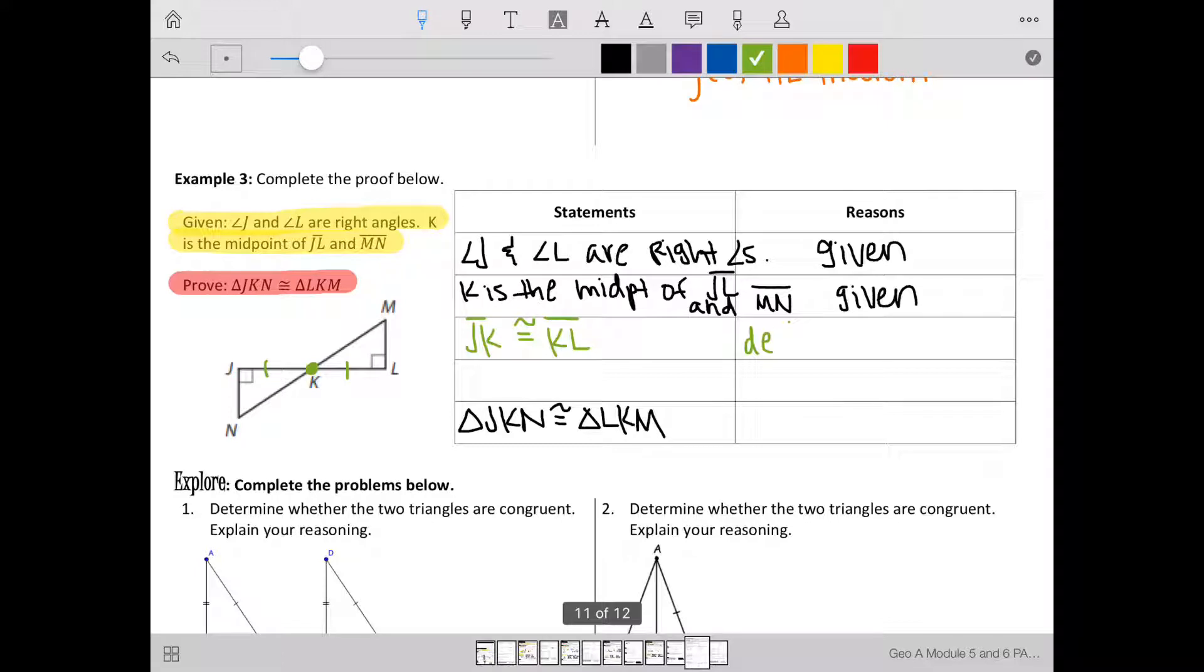And that's because of the definition of midpoint. Also, since K is the midpoint of MN, this side of MN would need to be congruent to this side. So NK is congruent to KM. Again, because of the definition of midpoint.